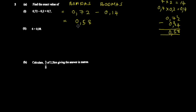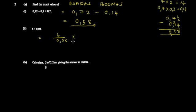The next part asks for 6 divided by 0.08. When the denominator is a decimal, we need to make it a whole number for convenience. To do that, multiply by 100 so the decimal point shifts and the denominator becomes 8.